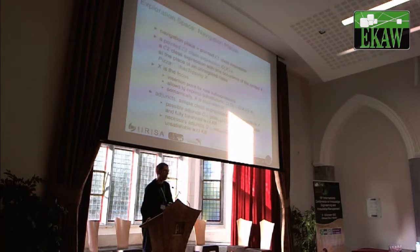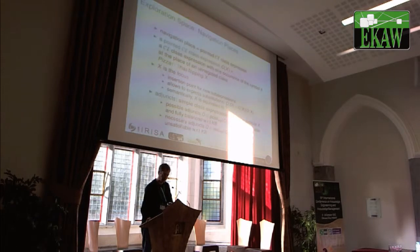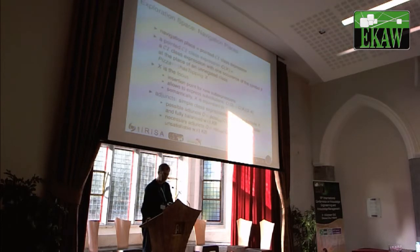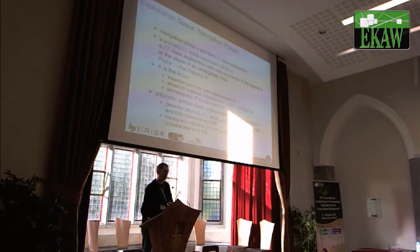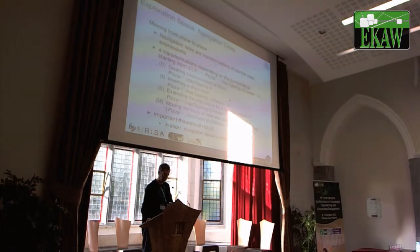At every navigation place, the domain expert is given a set of adjuncts. Adjuncts are simple class expressions suggested for substitution at x. There are possible adjuncts — simple class expressions such that if you substitute x by d, you still have a satisfiable class expression — and necessary adjuncts, where the negation of d makes the class unsatisfiable. If d is a possible adjunct, both d and not-d are possible. If it is necessary, only d is possible and the negation of d is not possible.